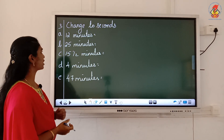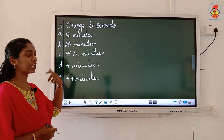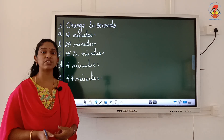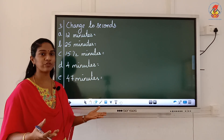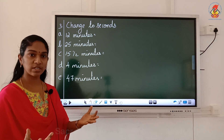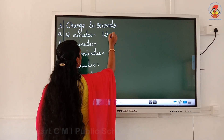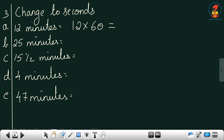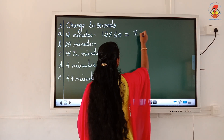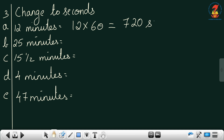Now moving to the next set of questions: change to seconds. The questions are given in minutes; you have to convert to seconds. Bigger unit to smaller unit — you multiply. So 12 into 60: what is 12 into 6? That is 72, write 72 and add the zero. The answer is 720 seconds. Question B you can do as homework.